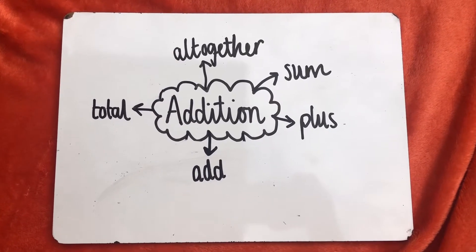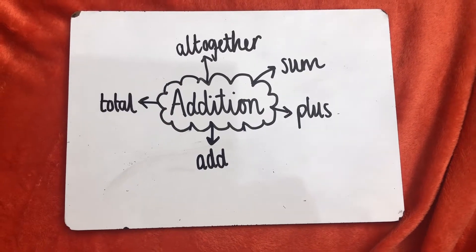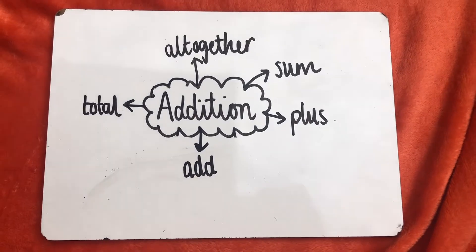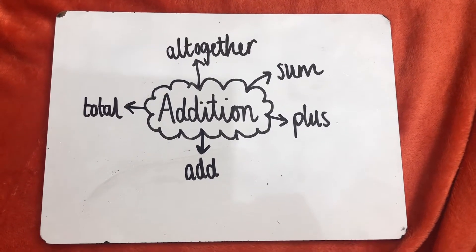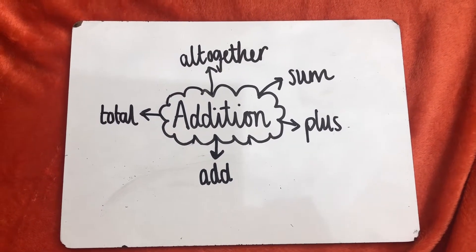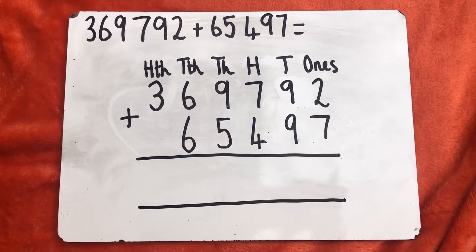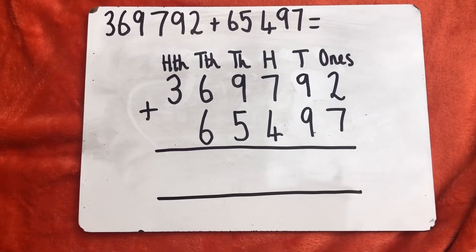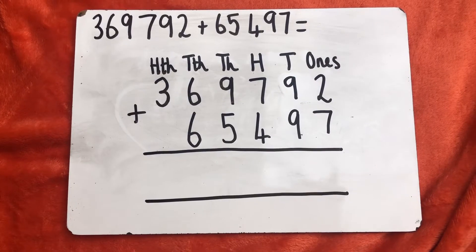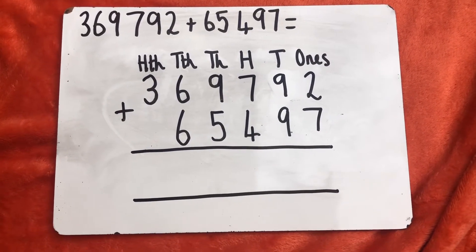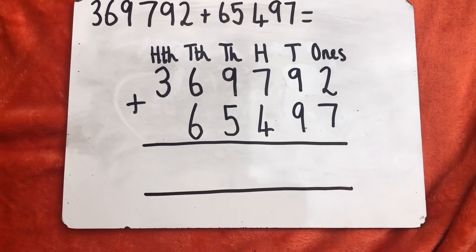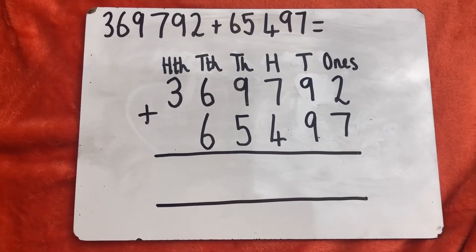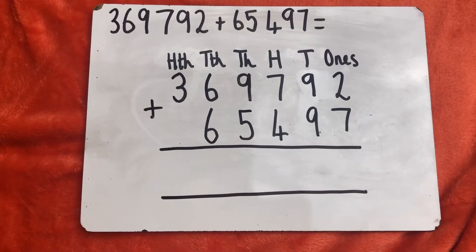Firstly we're going to look at addition. The words associated with addition are sum, plus, add, total and altogether. So for example if I asked you the sum of the numbers seven and three, I'd be asking you to add them together. Here is our first question. I'll read it to you because it might have been a while since you've read out these long numbers. We've got 369,792 plus 65,497 and I've lined these up in the bunk bed method, our column addition method, and I've labelled our place value columns.